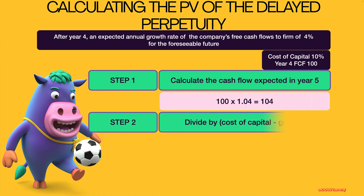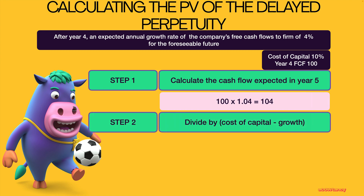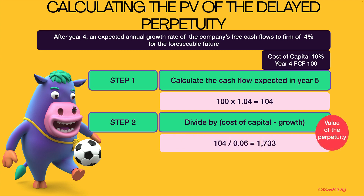Step two: we need to turn that into a perpetuity. You do that by dividing it by the cost of capital minus growth as a decimal. Cost of capital is 10%, growth is 4%, so 6% as a decimal is 0.06. So you take 104 and divide it by 0.06, and that gives you the value of the perpetuity.